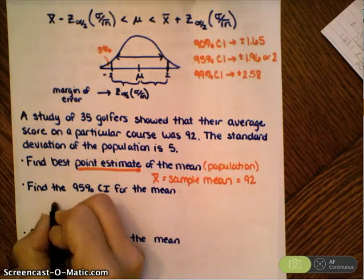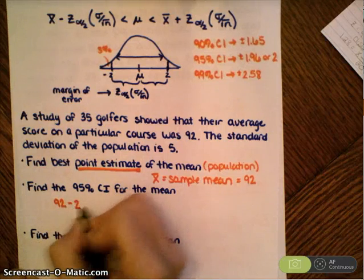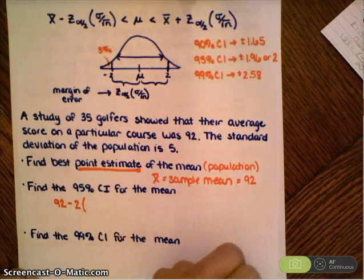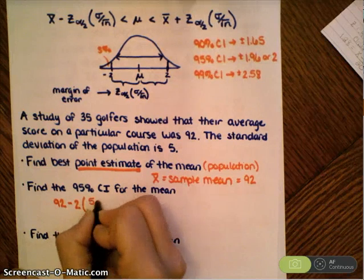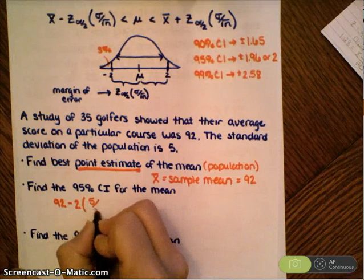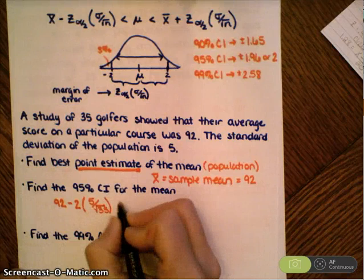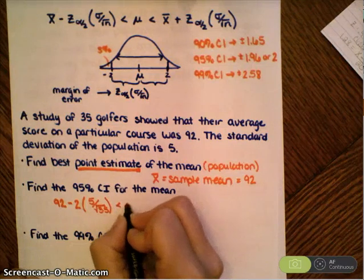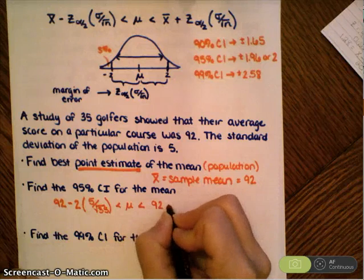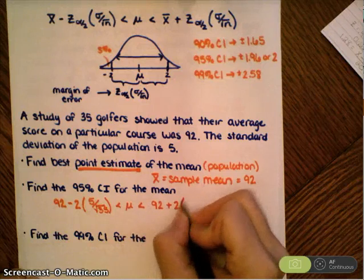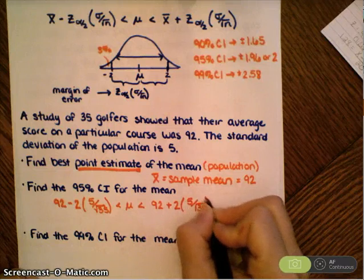I have my sample mean, which is 92, and I'm going to subtract 2 for my z-score. My standard deviation was 5, and I'm going to divide that by the square root of my sample size, which was 35. Then on the right-hand side, that same calculation, but I would add 2 times 5 divided by the square root of 35. I'm going to add the margin of error instead.